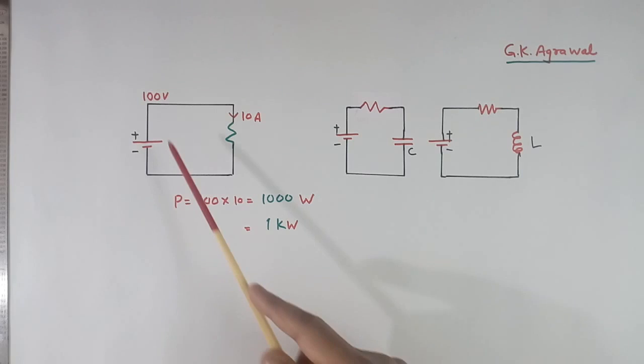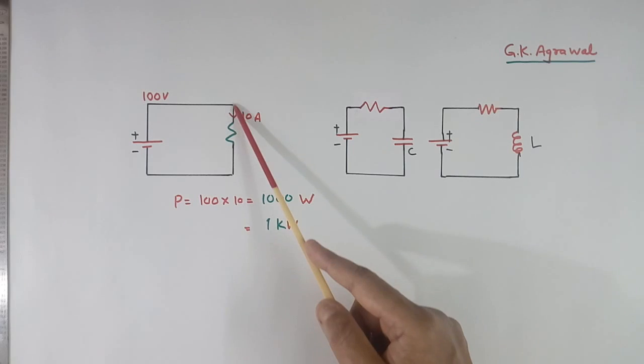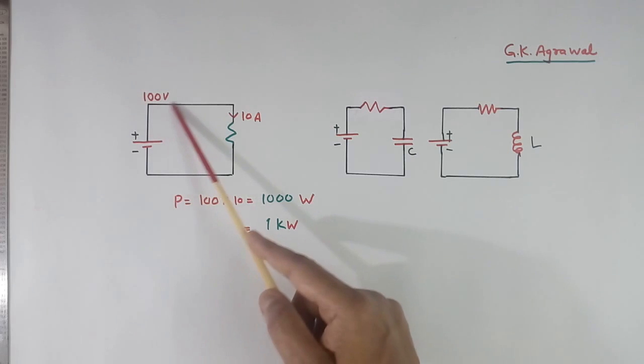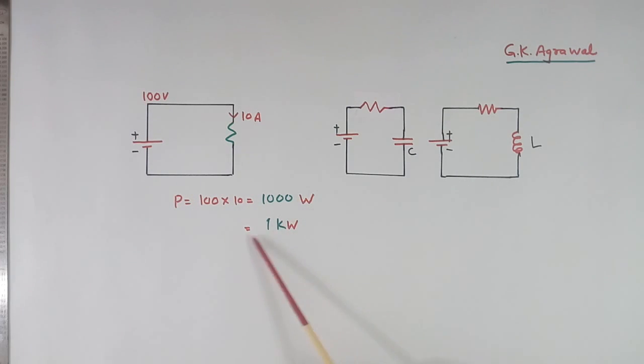So far we were discussing AC supply. Now here it is DC. I have connected one resistor. Current flow is 10 A. Here again, power loss in this resistor P will be voltage multiply by current, 1000 Watt or 1 kW. But this is active power. Suppose we connect capacitor and reactor, then reactive power or VA are not applicable here. There will be only charging or discharging. Some energy will be required during the charging. There will be some small loss. There is no concept of reactive power or VA power in DC. Only active power is there.